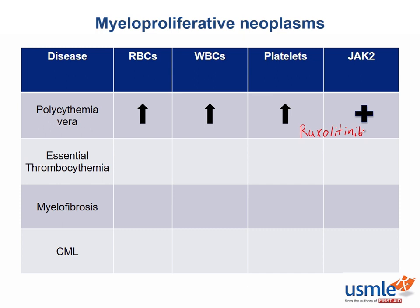In essential thrombocythemia, you would actually see a selective increase in the platelets, hence the name. However, a rather strange aspect of this disease is that even though the platelet count is high, you can present with either bleeding or clotting. Bleeding in this case is because the platelets are fairly nonfunctional, even though they are present in very large numbers.